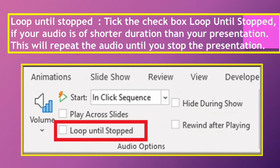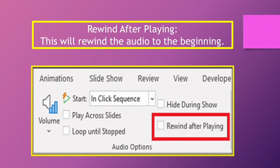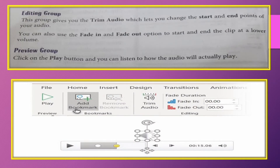Loop Until Stopped — if your audio is very short, click this checkbox so it keeps replaying until you stop it. Hide During Show — if you want the icon to be hidden during the presentation, click the checkbox. Rewind After Playing — this will rewind the audio to the beginning. Under Editing Group, Trim Audio lets you change the start and end points of your audio. Under Preview Group, click the Play button to check your audio.